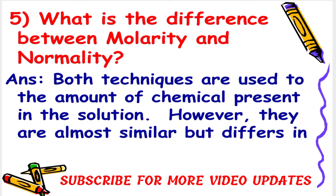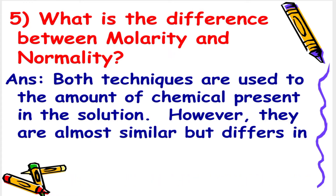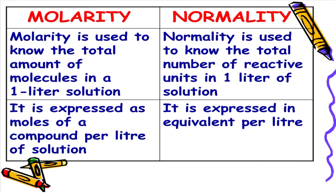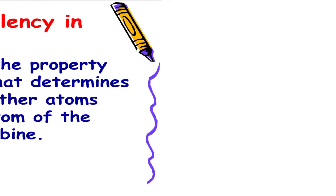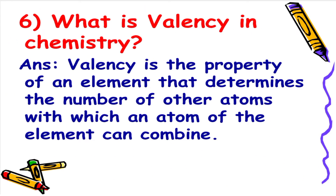Next: What is the difference between molarity and normality? The answer is both techniques are used to measure the amount of chemicals present in a solution. However, they are almost similar but differ in that molarity is used to know the total number of moles in 1 liter of solution, while normality is used to know the total number of reactive units in 1 liter of solution. Molarity is expressed as moles of a compound per liter of solution, whereas normality is expressed in equivalents per liter.